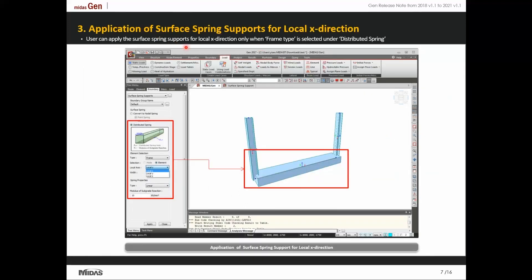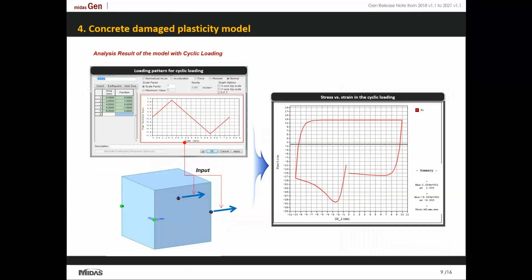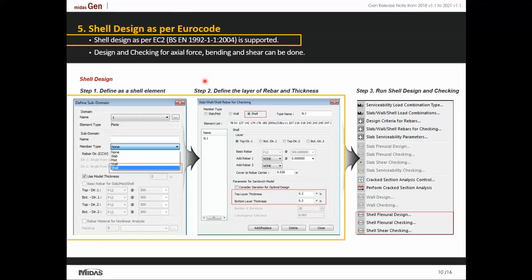Apart from point spring supports, surface springs can also now be applied to an area by providing distributed springs. The concrete damage plastic model offers a different stress-strain graph for tension as well as compression. You can see the analysis results of the model with cyclic loading for the concrete plastic damage model.